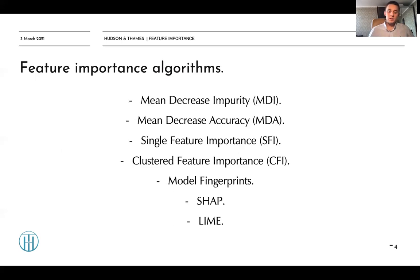Let's discuss the algorithms we will describe today: MDI, which is called mean decrease impurity; MDA, mean decrease accuracy algorithm; single feature importance, also called SFI; clustered feature importance, called CFI; model fingerprint; SHAP; and LIME feature importance algorithms.